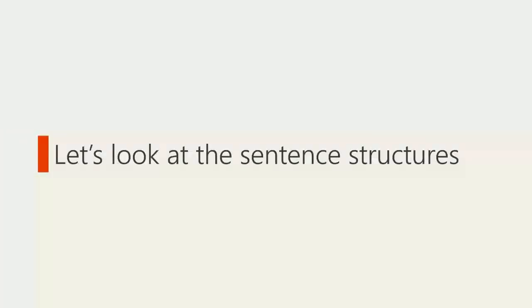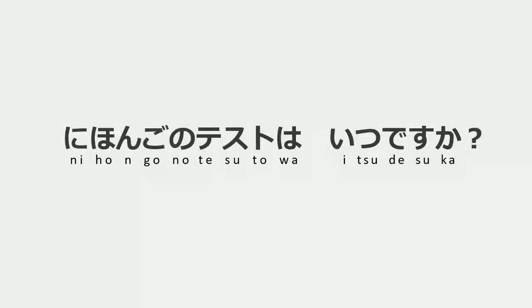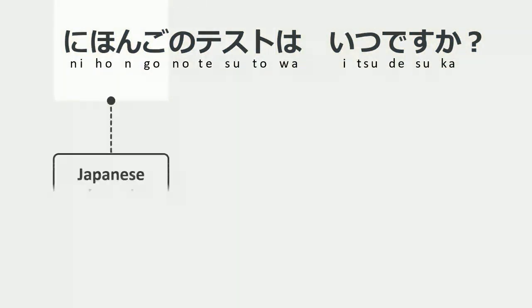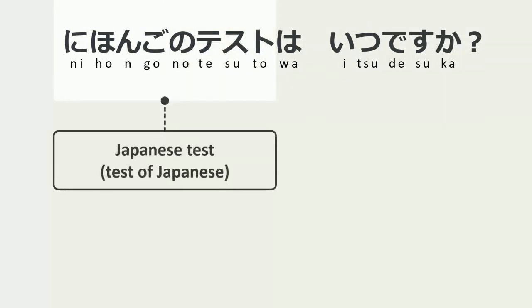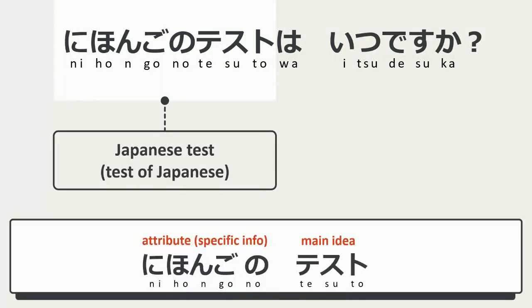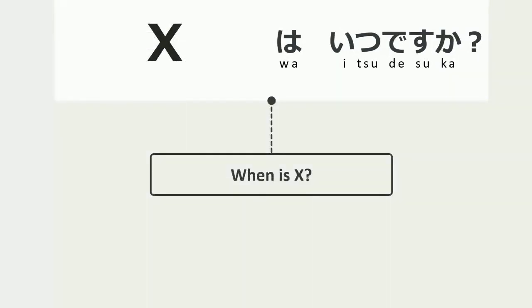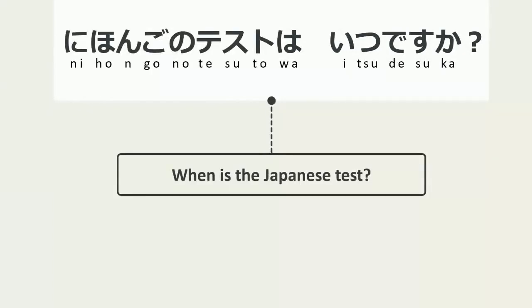Now let's look at the sentence structures. The first sentence is 日本語のテストはいつですか。 テスト means test, which is a noun. 日本語 means Japanese as a language, which is also a noun. 日本語のテスト means Japanese test. As we've learned, テスト is the main idea, and 日本語 is the attribute of the main idea. エックスはいつですか means 'when is X', so 日本語のテストはいつですか means 'when is the Japanese test'.